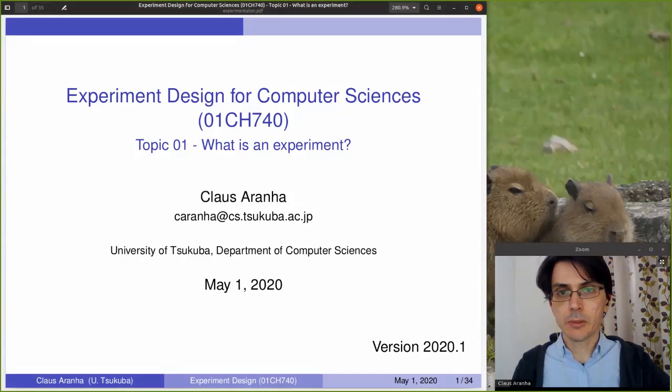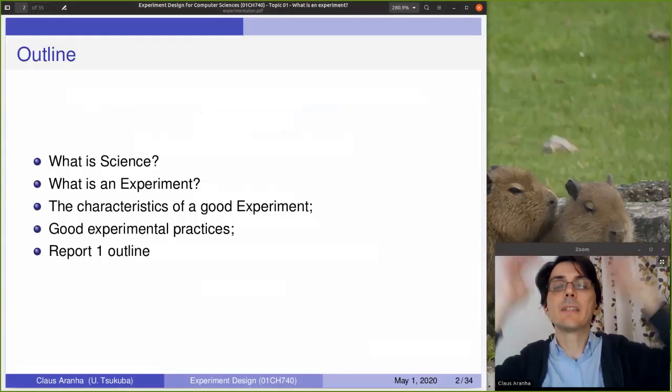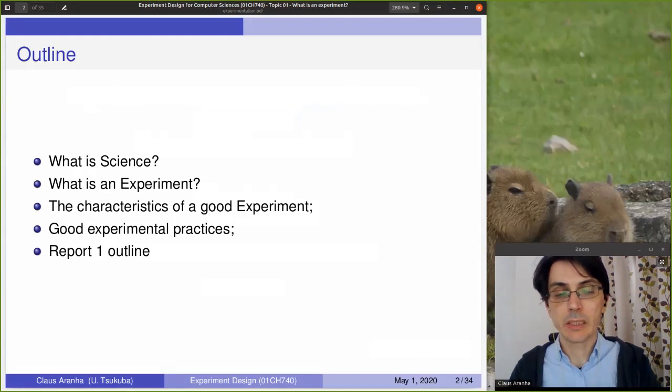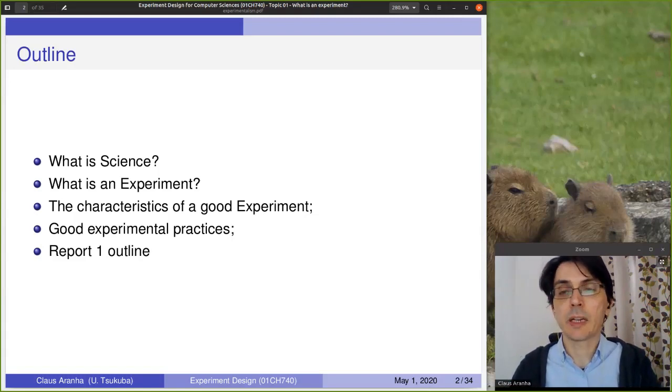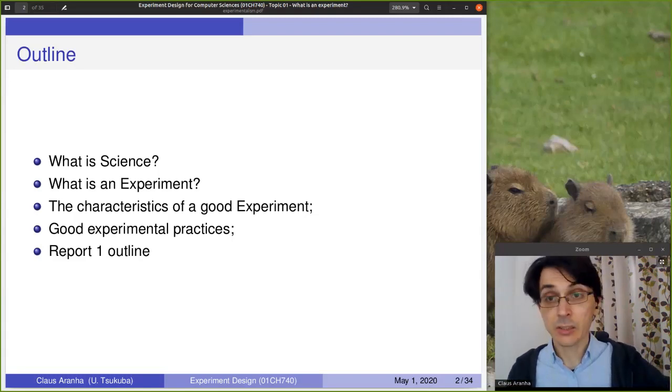Before we go forward, the outline for this course covers the following topics. First, we're going to have a discussion about what is science, and then after that we will discuss inside science, what is an experiment, the characteristics that make a good experiment and some good practice to guarantee that your experiment is useful and scientific. And finally, I will describe the report number one in a little bit more detail.